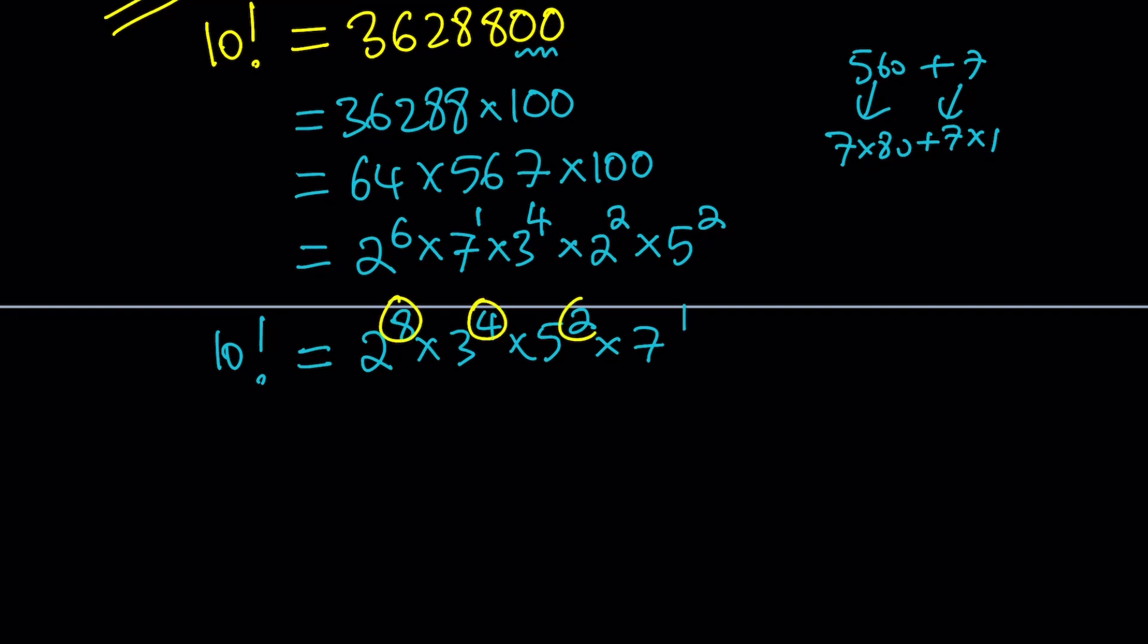So these are going to be the values of A, B, C, D. In other words, A is equal to 8, B is equal to 4, C is equal to 2, and D is equal to 1. The problem is asking for A, B, C, D. But if it's asking for the sum of A, B, C, D, then you can just add them up, and you're going to get 15 from there.